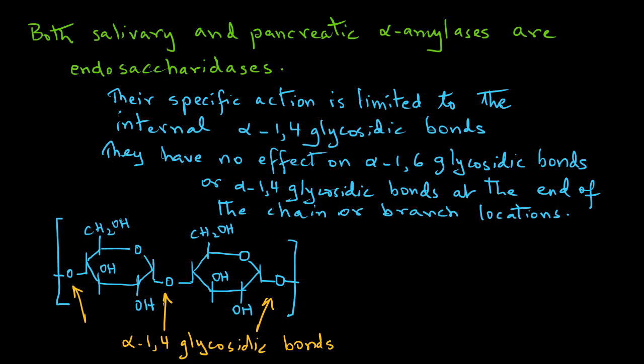In summary, while the salivary and pancreatic alpha-amylases play an important role in starch hydrolysis, the hydrolysis products such as the disaccharides must be further broken down by disaccharidases, as we will see later in another tutorial.